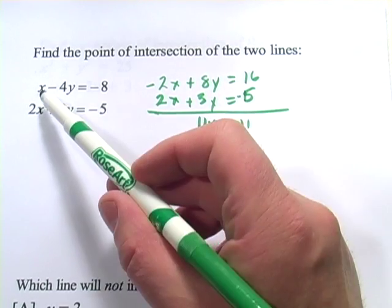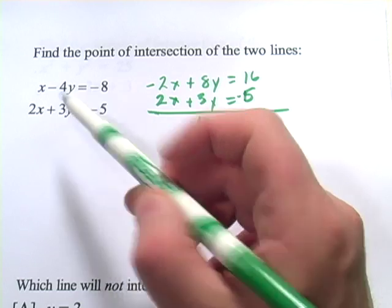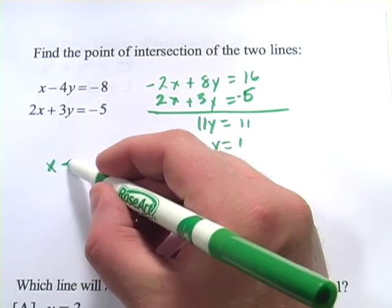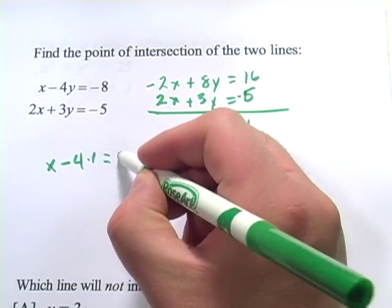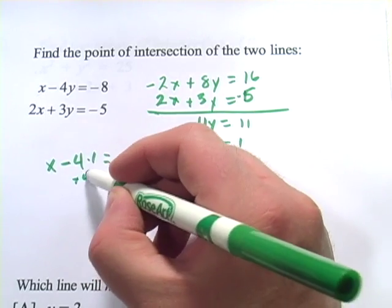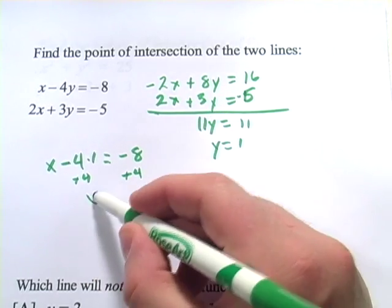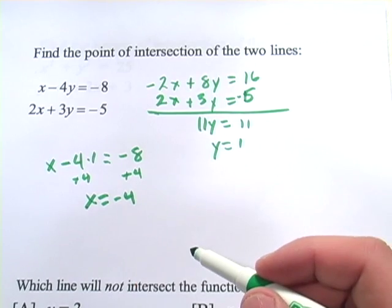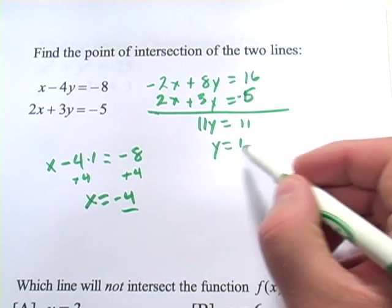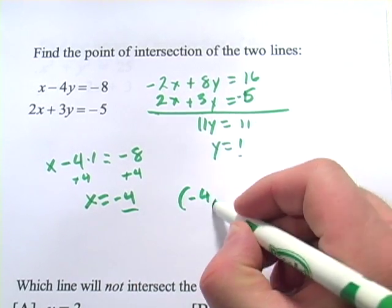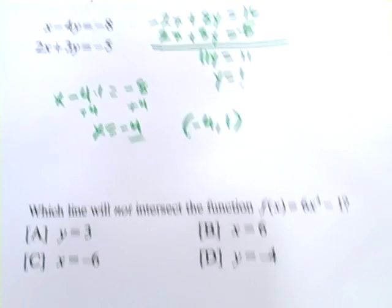We can solve for x by plugging 1 back in for y here. That would give us x minus 4 times 1 equals negative 8. If I add 4 to both sides, I get x equals negative 4. So our point of intersection is negative 4, 1. And we can write it like this.